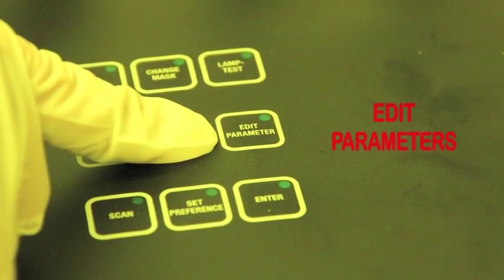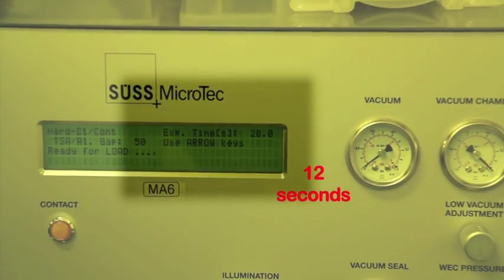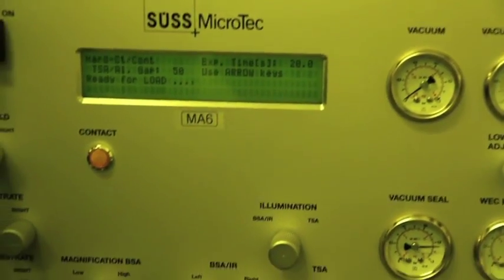Check the exposure time by pressing edit parameters and make sure the time is set at 12 seconds. If not, alter it by using the up and down arrows.